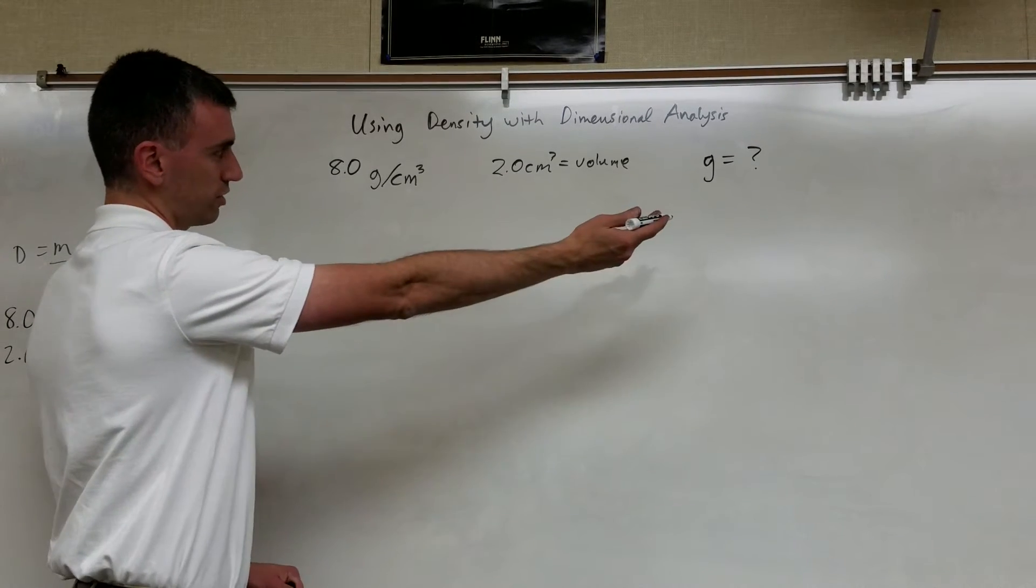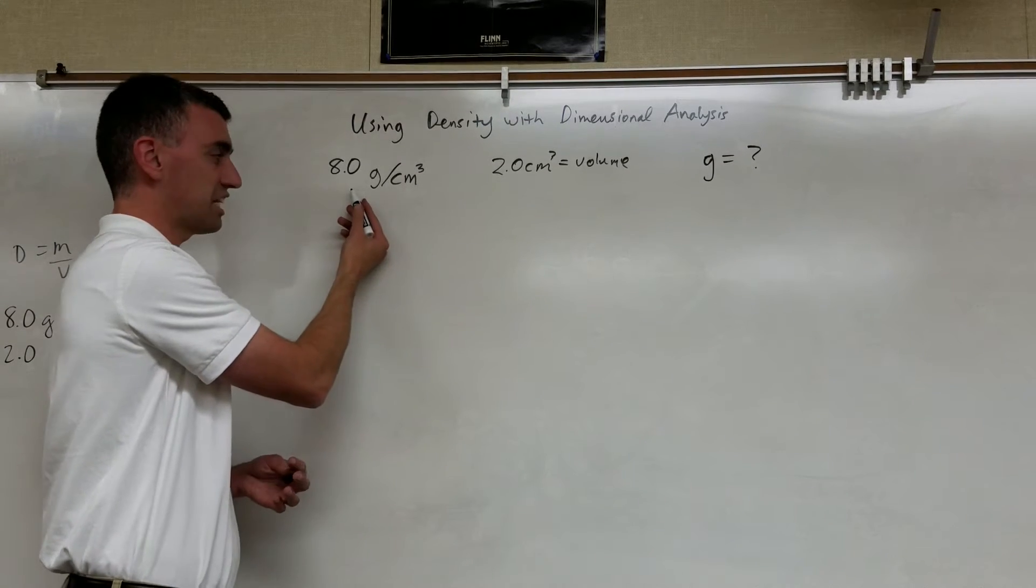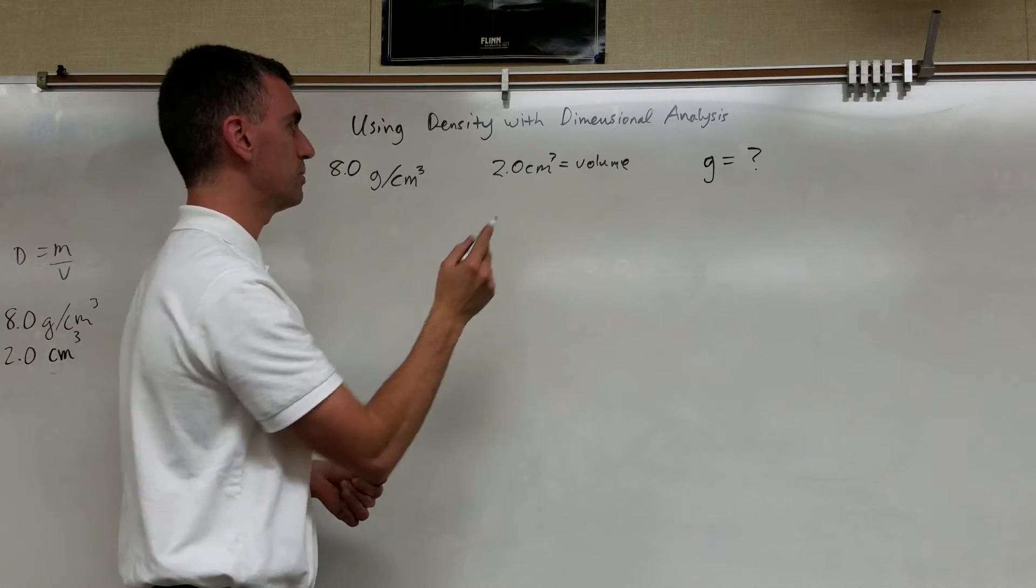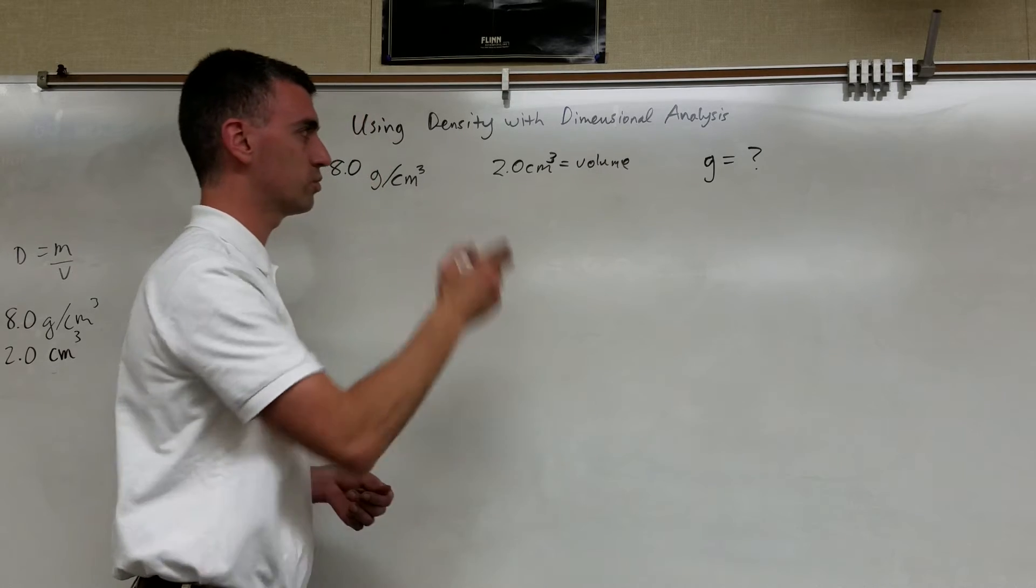So look at this situation. Let's say I have an object. Its density is 8.0 grams per cubic centimeter and its volume is 2.0 cubic centimeters. And the question is, given such an object, what is its mass?